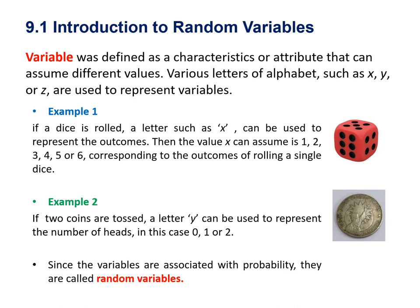Then the values x can assume are 1, 2, 3, 4, 5, or 6, corresponding to the outcomes of rolling a single dice. Example 2: if 2 coins are tossed, a letter y can be used to represent the number of heads. In this case, 0, 1, or 2.